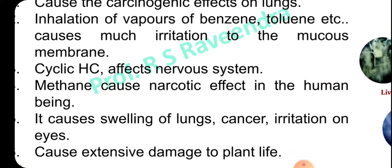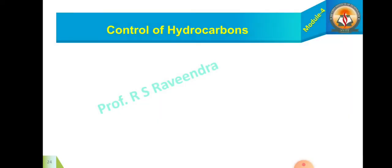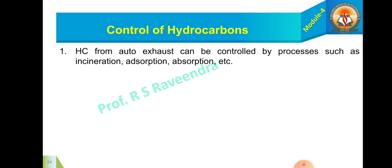Now how to control this? Hydrocarbons from the auto exhaust can be controlled by the processes such as incineration, adsorption, absorption. Hydrocarbons, that is HC, gets converted into carbon dioxide and water.